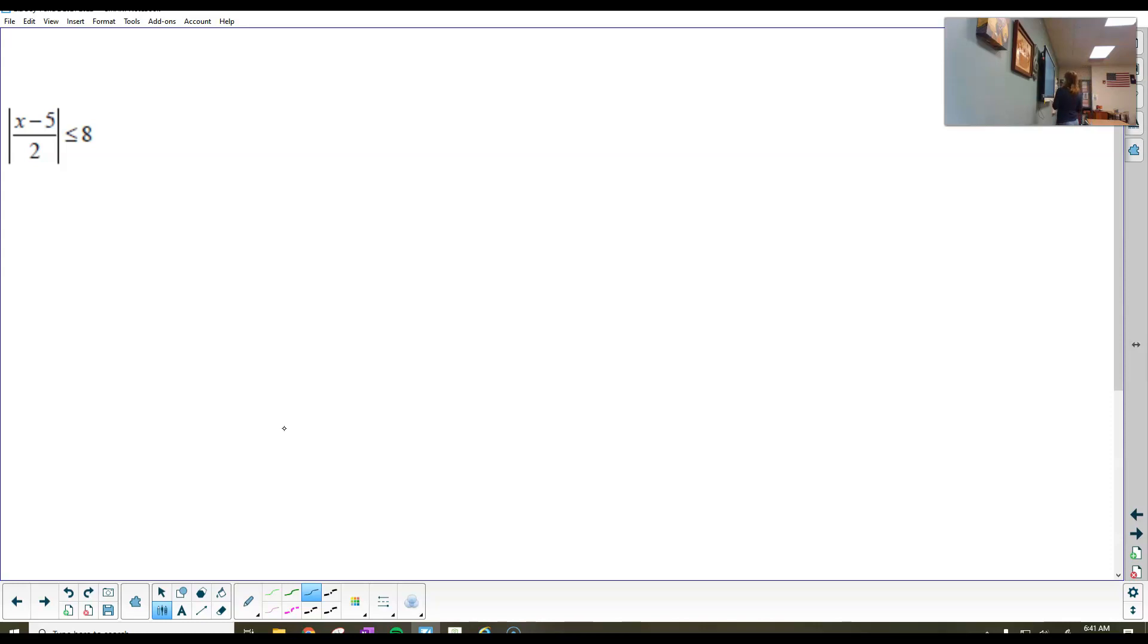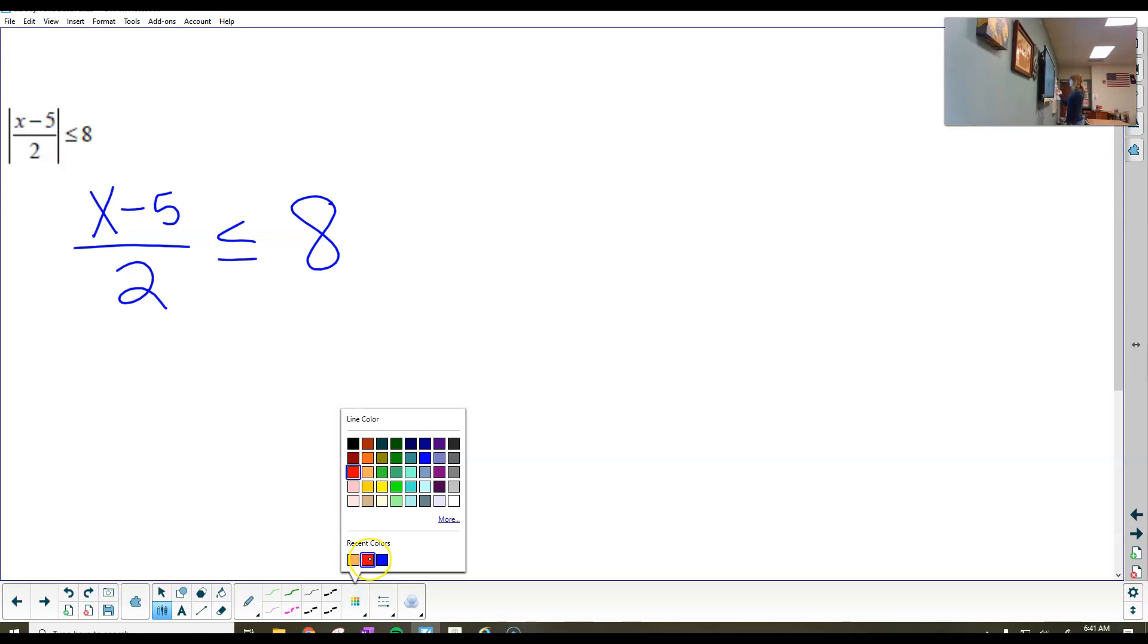Remember the first thing that we always do is to make sure the absolute value bars are isolated. They're already isolated here. So I'm going to set up my original, just like I would if I was solving a regular equation. And then over here on the other side, we're going to set up the opposite.